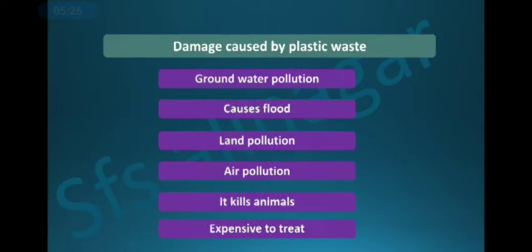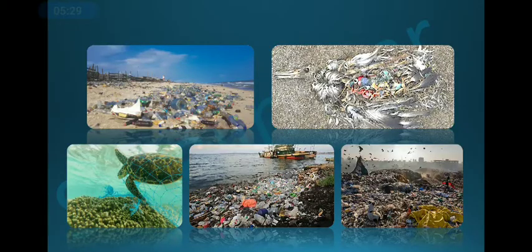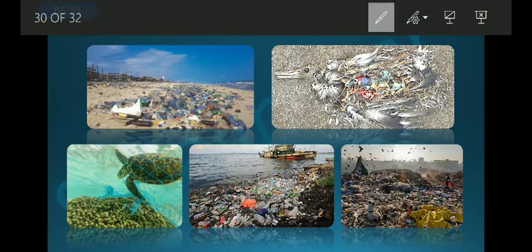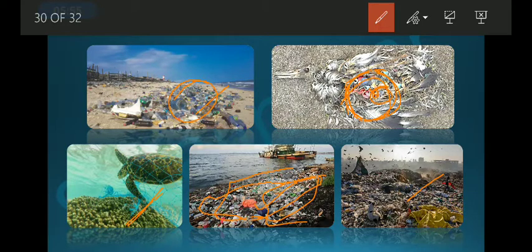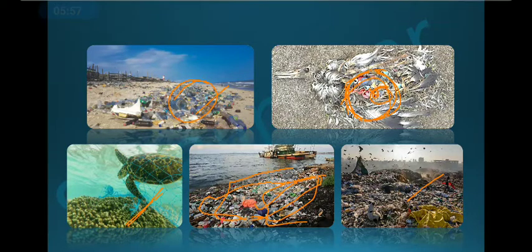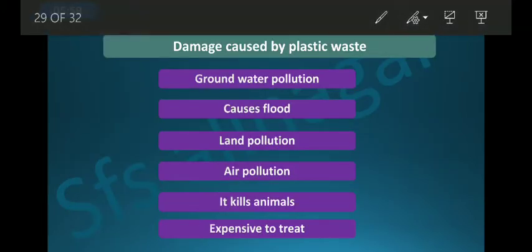Next, let's look at the damage caused by plastic waste. Plastic is spread everywhere — animals eat it and die because they cannot digest it properly. It is found on river banks, landfills, beaches, and in marine environments. So what exactly is the damage caused by plastic?